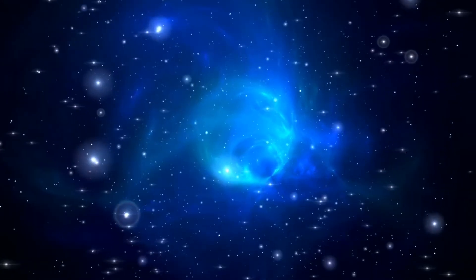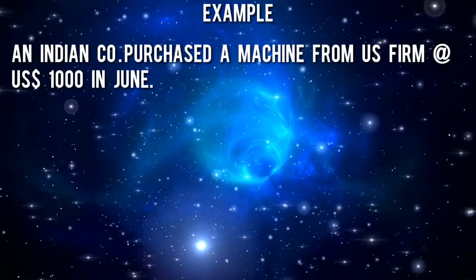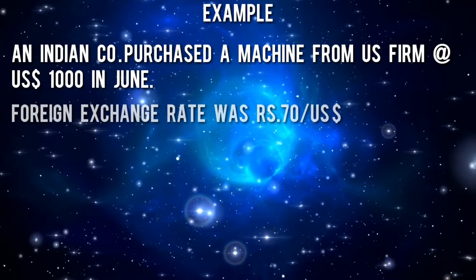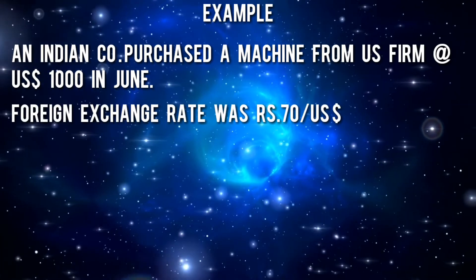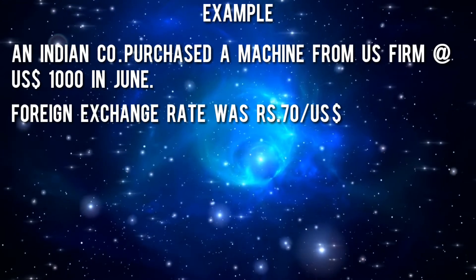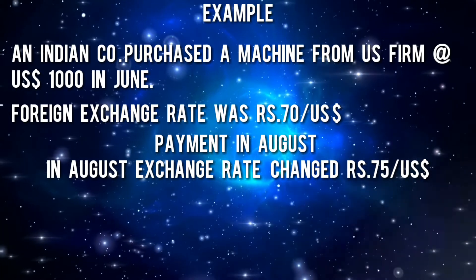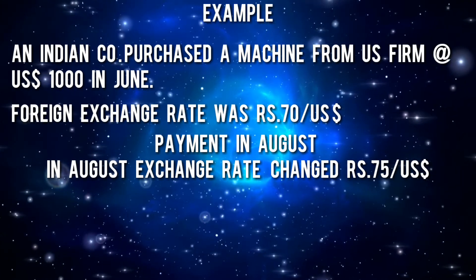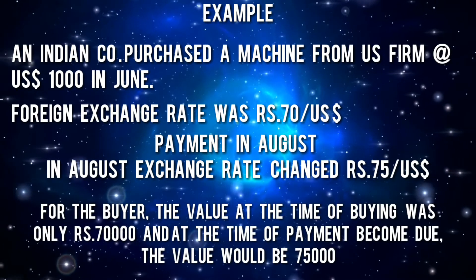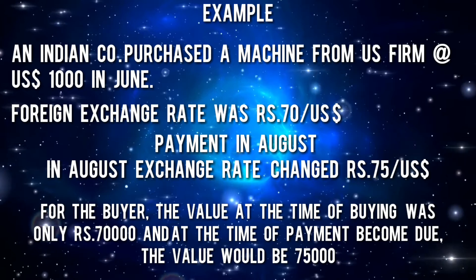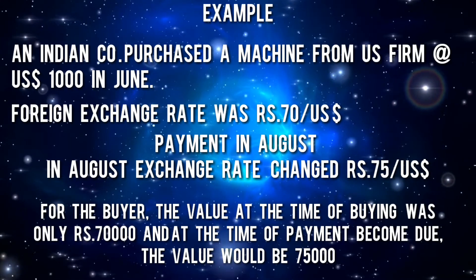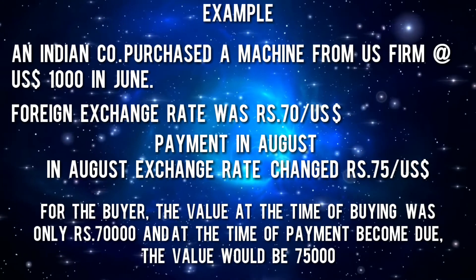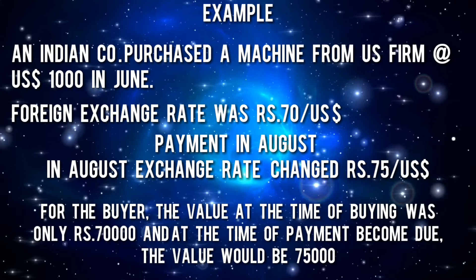Suppose an Indian company purchased a machine from a US firm at US $1,000 in June. At that time, the foreign exchange rate was ₹70 per US dollar. The payment terms stated payment in August, and at the date of payment the exchange rate changed to ₹75 per US dollar. The value at the time of buying was ₹70,000 (1,000 × 70), and at the time payment became due it was ₹75,000 (1,000 × 75) — so it became costlier by ₹5,000. For the seller there is no impact, but for the buyer the risk of losing an additional ₹5,000 is termed as transaction exposure.